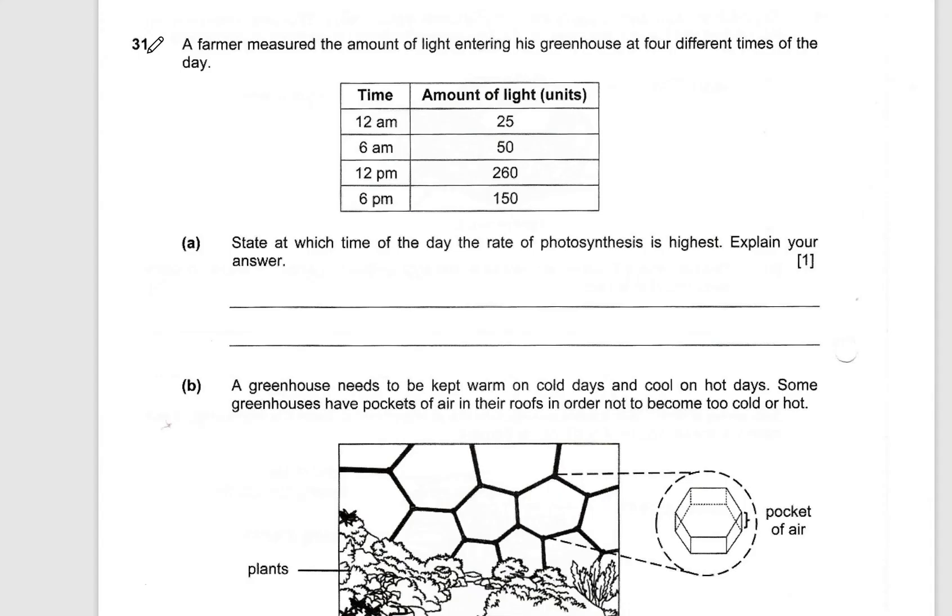First one is question 31 from the 2018 paper. A farmer measured the amount of light entering his greenhouse at four different times of the day. State at which time of the day the rate of photosynthesis is the highest and then explain your answer.